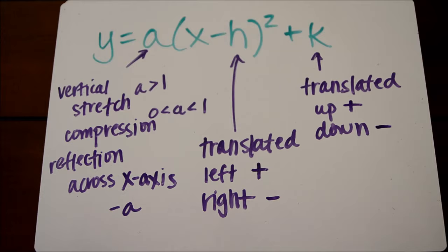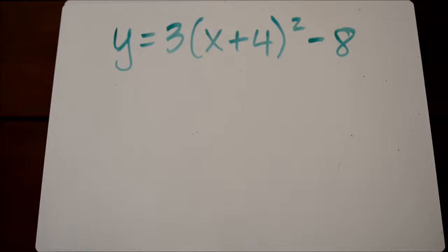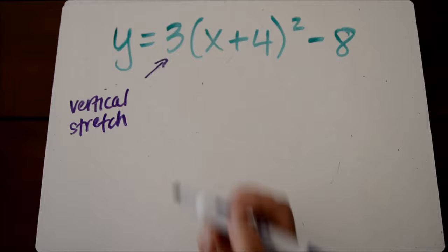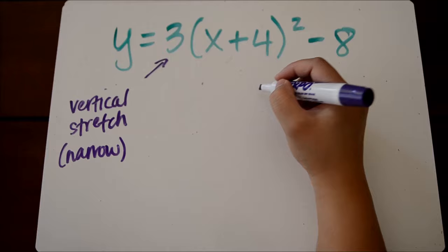Let's take a look at our first example. So here we have y equals 3 times the quantity of x plus 4 squared minus 8. This 3, our a value, tells us we have a vertical stretch, because that's a number that's bigger than 1. That means our graph is going to look a little narrow.